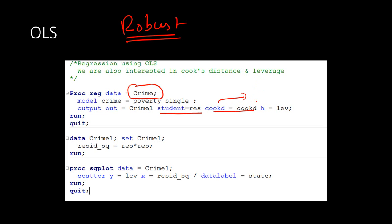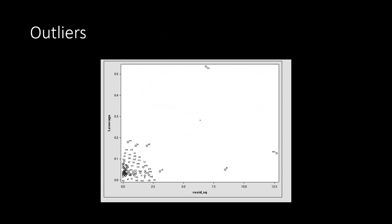Cook's distance and leverage are statistics used to find outliers — they represent a kind of distance between the outliers and the rest of the observations. If you're not familiar with Cook's distance or leverage, you can check Wikipedia for clear definitions. We also plot the leverage to visualize how many outliers we have.